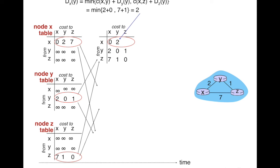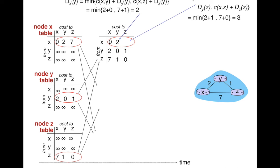To calculate the cost to reach z from x, x can reach z either directly or through neighbor y. Going through y: the direct link cost cxy is 2 and the cost of reaching z from y is 1 (from y's distance vector), giving a total of 3. Going directly to z: cxz is 7 and the cost of z to z is 0, giving 7. The minimum of 3 and 7 is 3. So the distance vector estimate of x changes once it receives the tables from y and z.